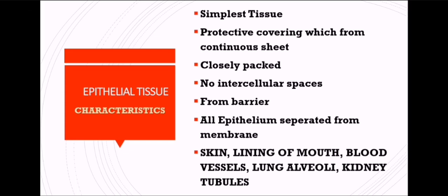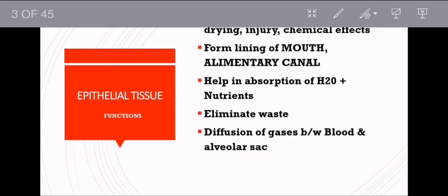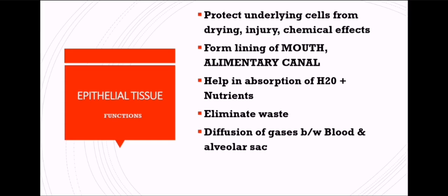The functions of epithelial tissue: it will protect the underlying cells from drying, from any injury, or from chemical effects. Drying means that if you are drinking less water, the epithelial tissue will help prevent drying. When you get a cut or injury, it acts as a protective cover. Regarding chemical effects, the main chemical is HCl — hydrochloric acid — which is produced in your stomach.